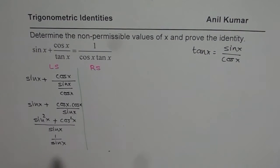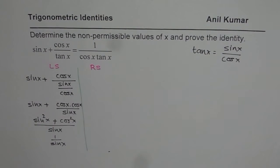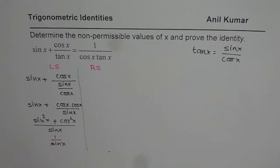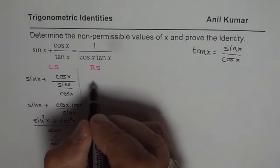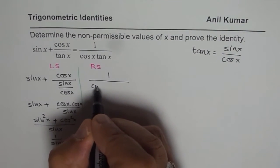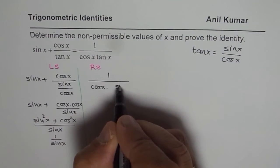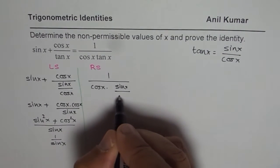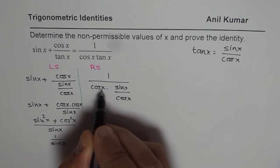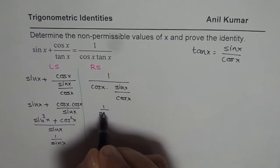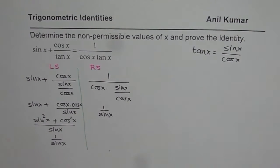So on the left side, the expression results into 1 over sin x. Now, what is on the right side? On the right side, we have 1 over cos x times tan x. Tan x could be written as sin x over cos x.